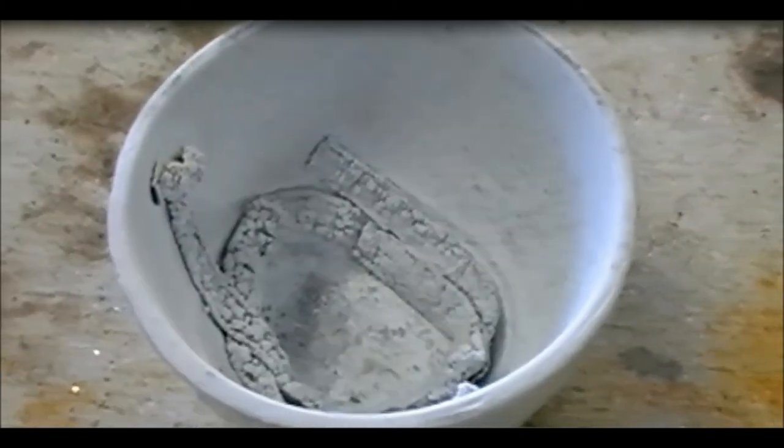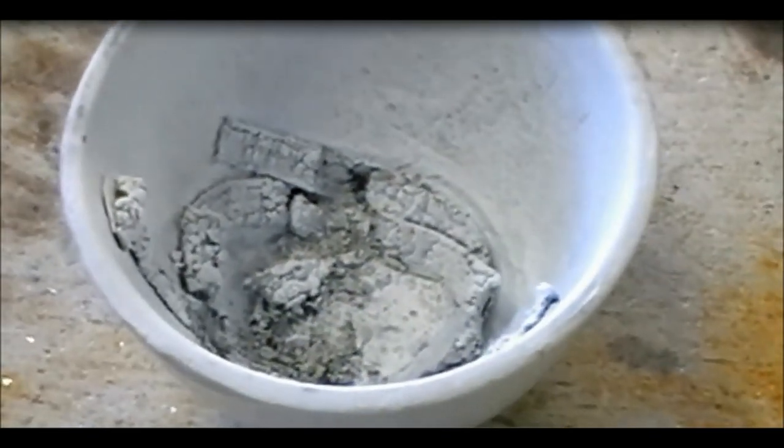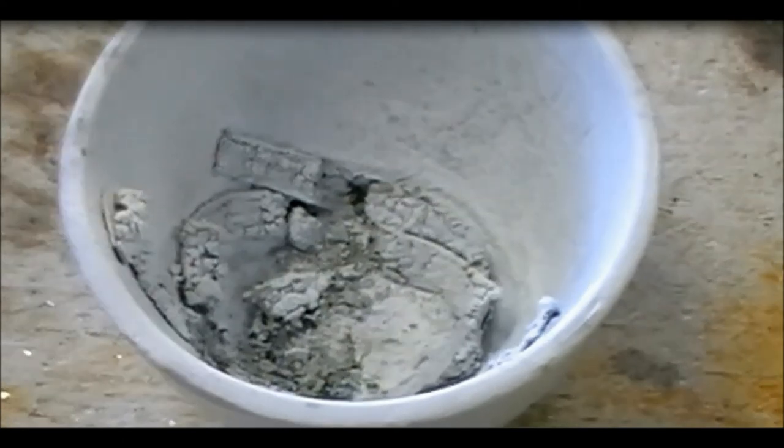So here we have the final product, magnesium oxide. And you can see it's nothing like either of the reactants. It's white, it's brittle and crumbly. So nothing at all like magnesium or oxygen.